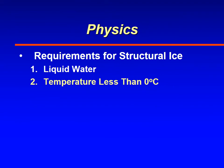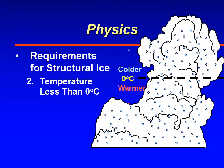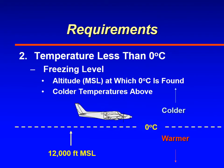So that's liquid water. Now let's look at temperatures colder than zero. As you go up through the atmosphere, temperature decreases with height, unless there's a temperature inversion. The simple concept is that as you climb, it gets colder, and finally you reach a point where the temperature is zero degrees Celsius. We call that level the freezing level — the altitude in feet MSL at which zero degrees Celsius is found.